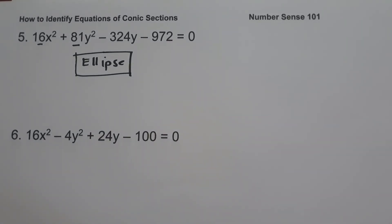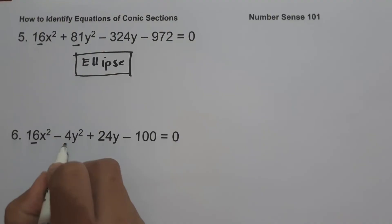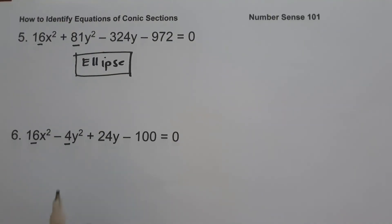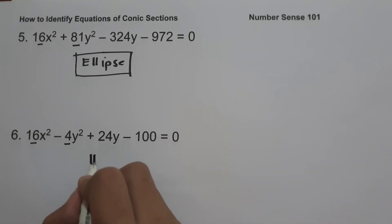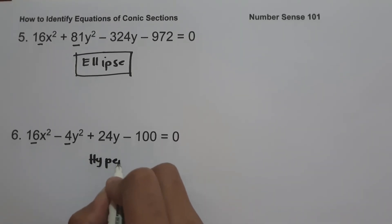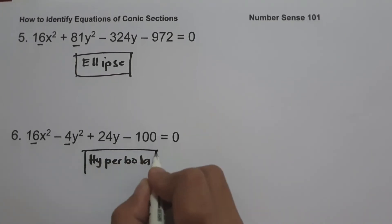On number six, we have 16x² − 4y² + 24y − 100 = 0. Since the coefficient of x² is not equal to the coefficient of y², and at the same time they have different signs, we can say that this equation is a hyperbola.